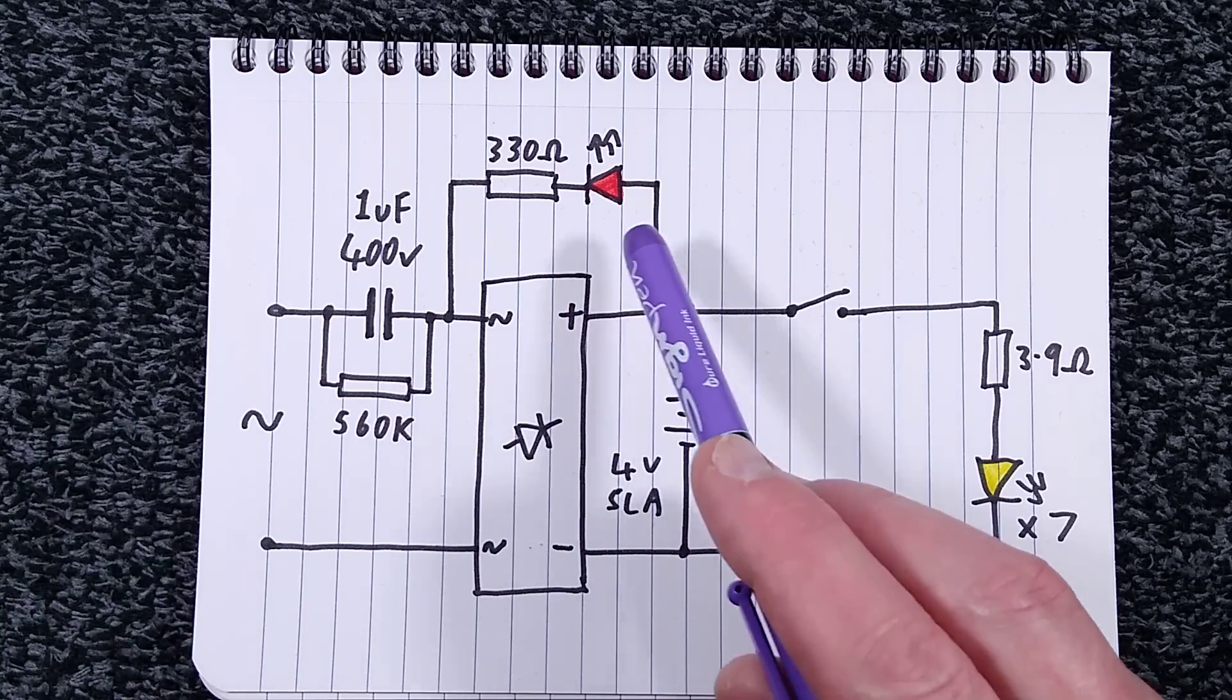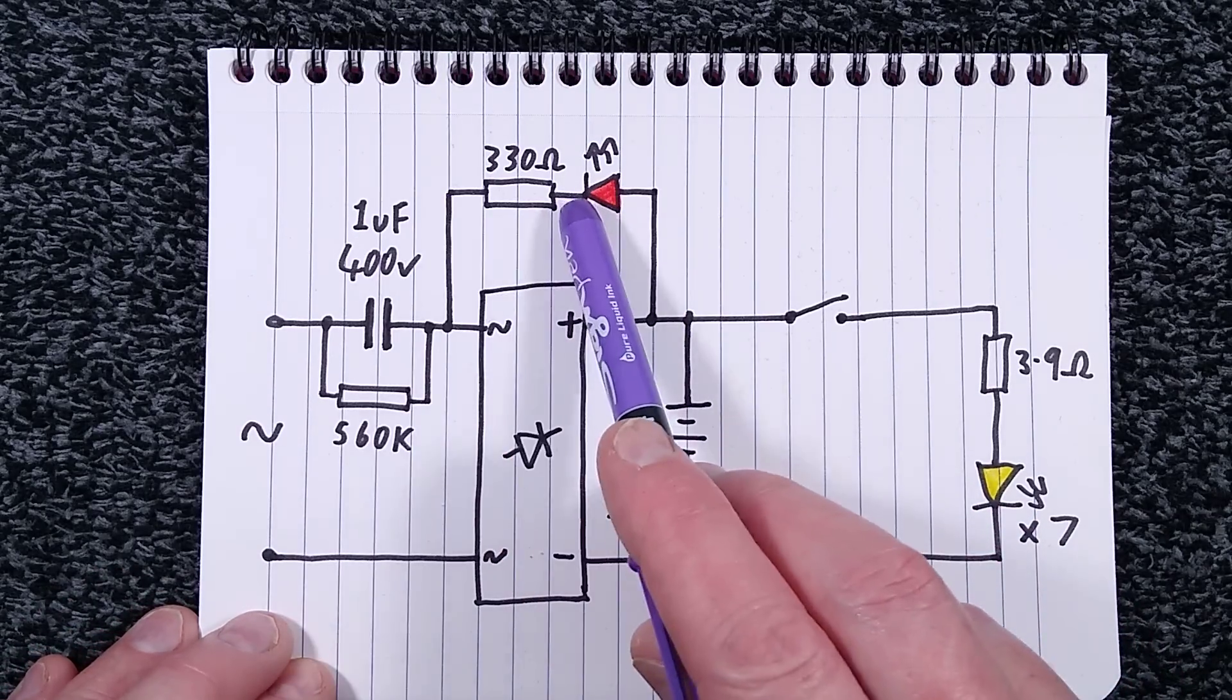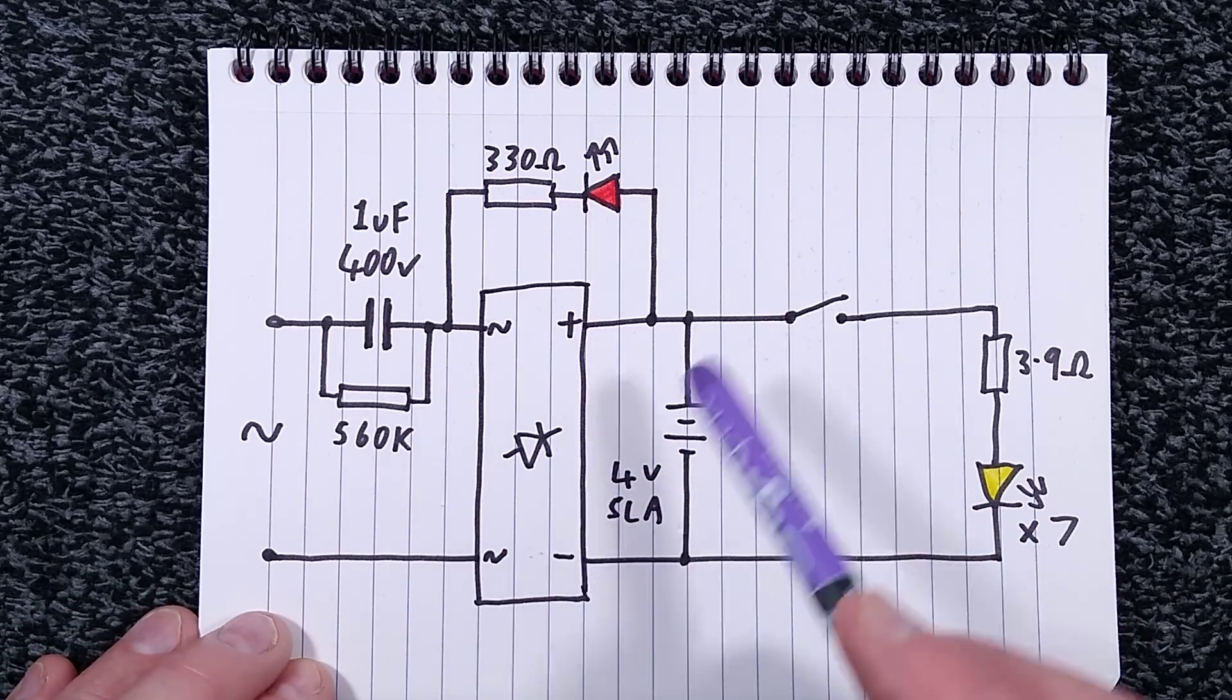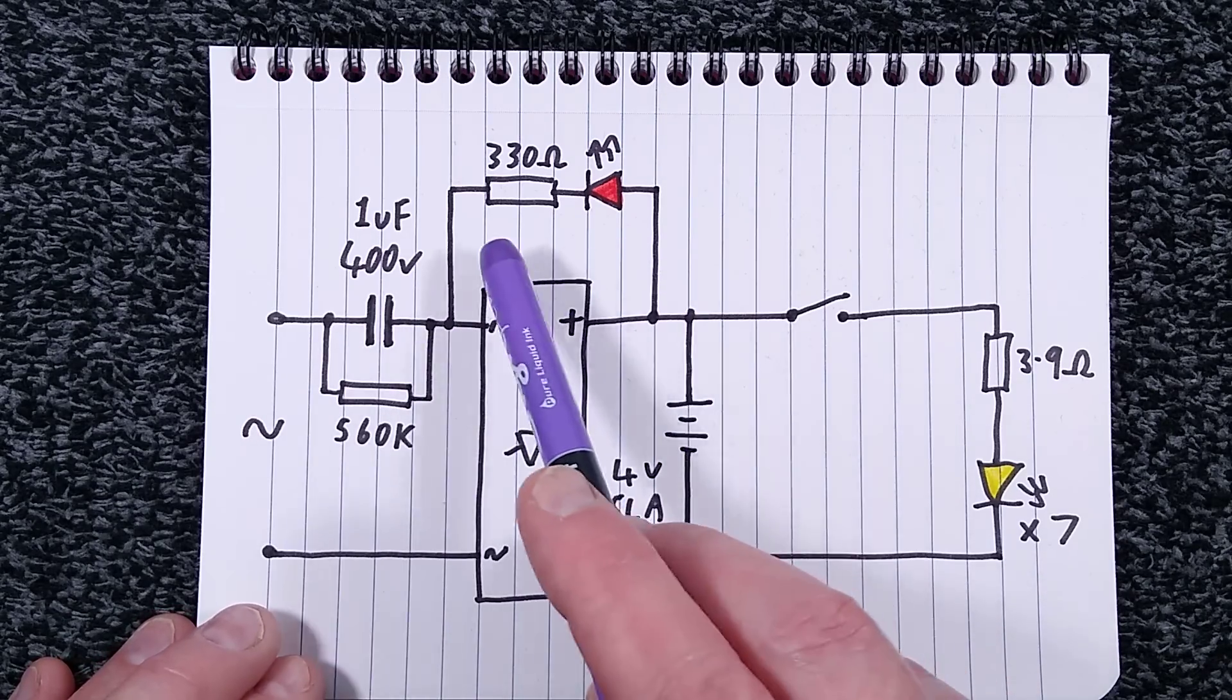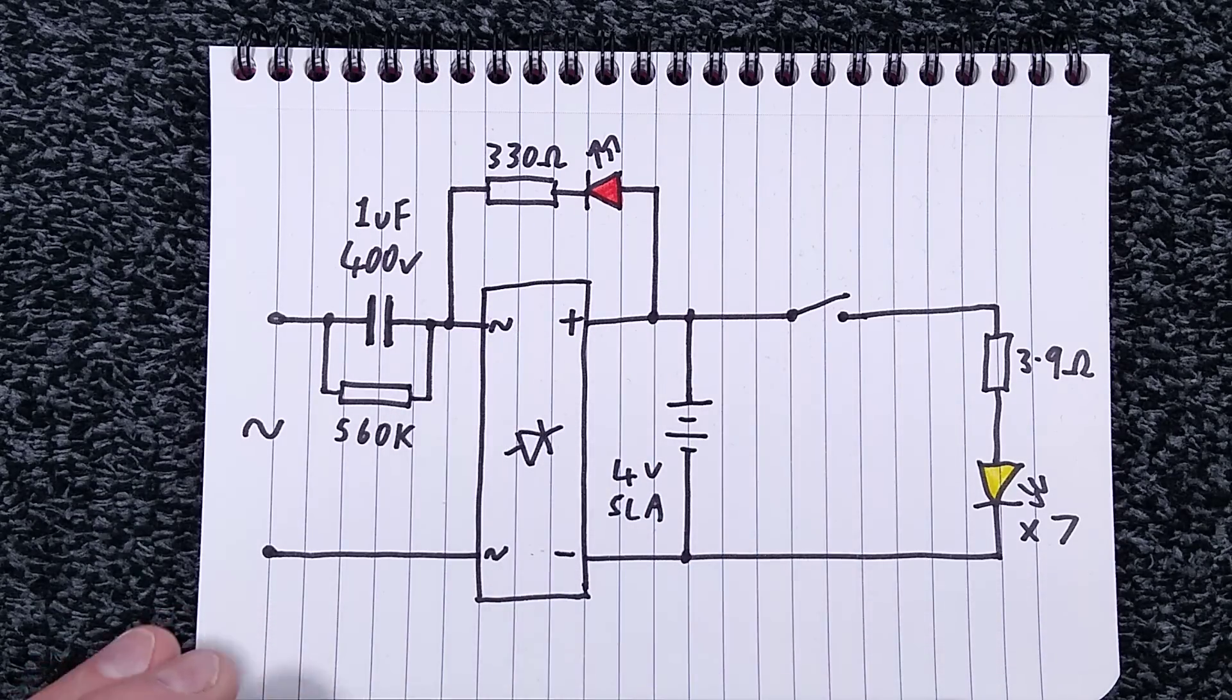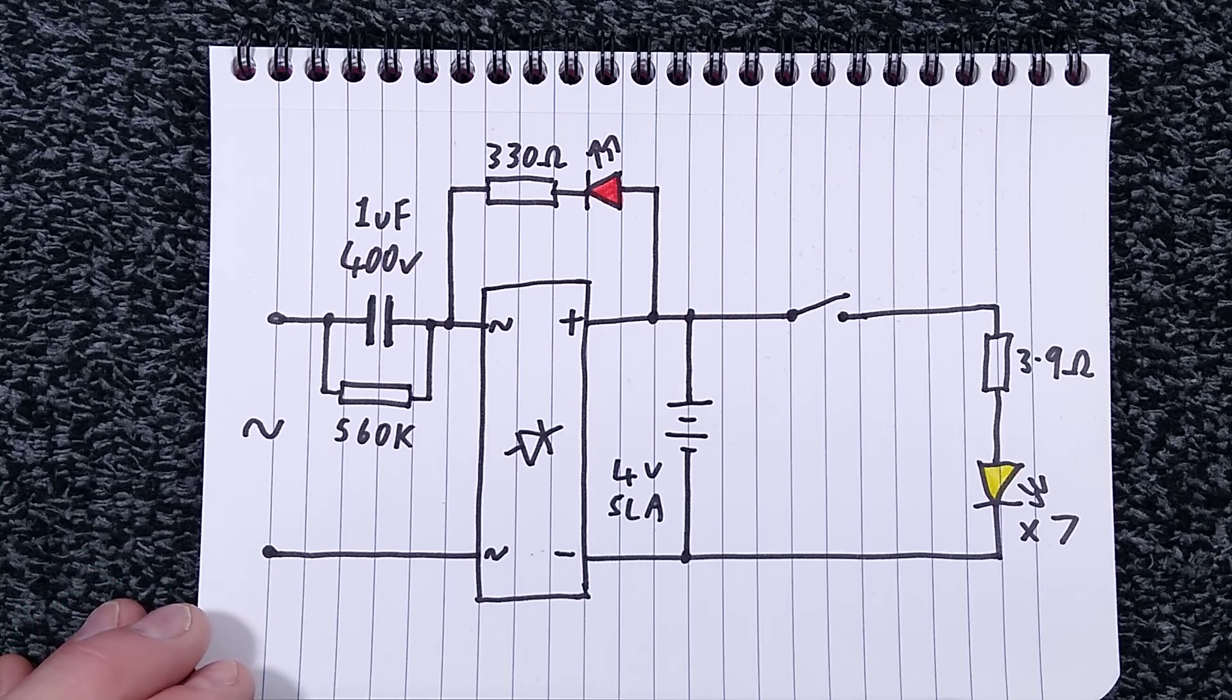The only other thing there is the charging indicator which is that little flickery red LED with its 330 ohm resistor. The reason it was flickery is because it's only lit for half the sine wave and it's basically just a very simple arrangement so that it lights while the cell is charging but it goes out when the power is removed and that is it.